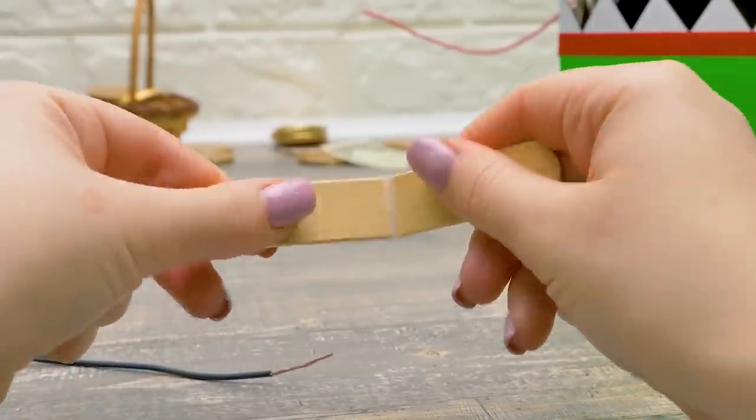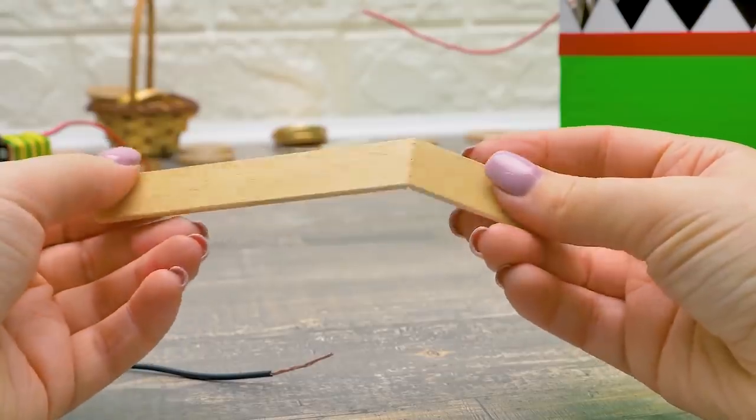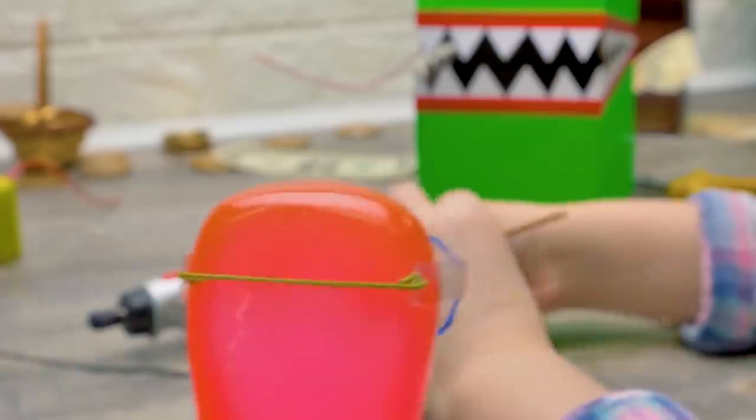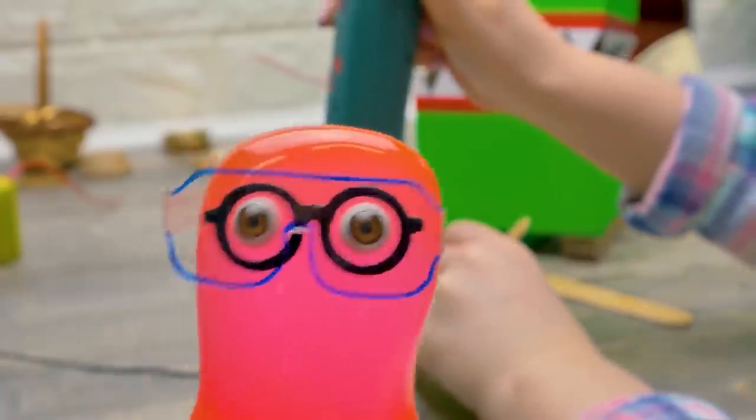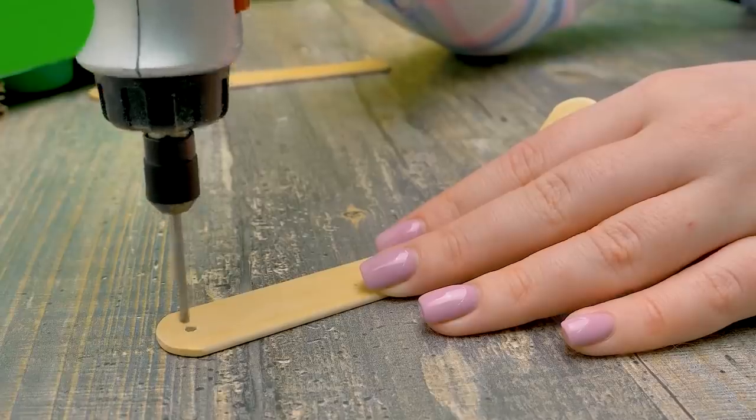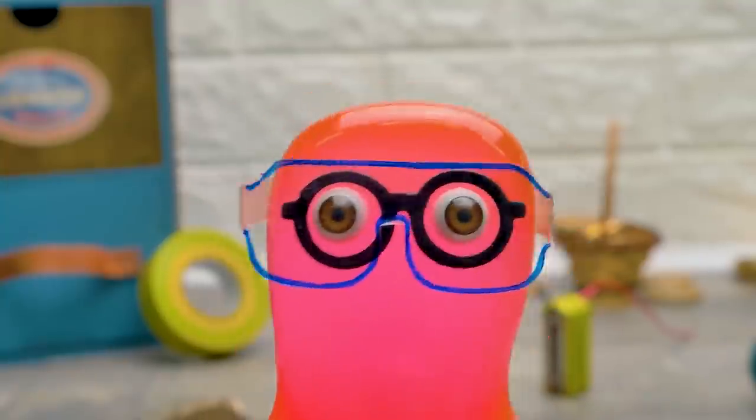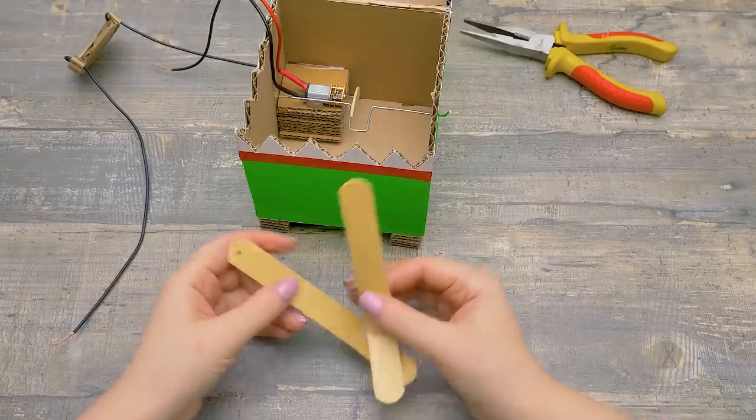And moving on to the arms. I'll measure 4.5 cm on these wooden sticks. Now we really do need the ruler. And I'll make a cut. Not actually a cut. I'll use a file for that and make a dent. Not all the way through. See? And you get this kind of bend. I'll apply some glue along the bend to make it sturdier.